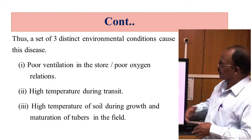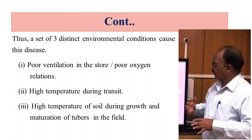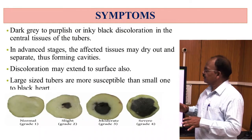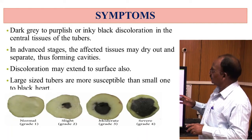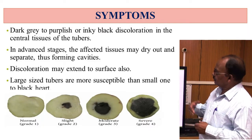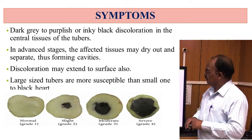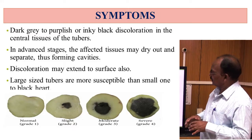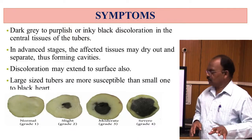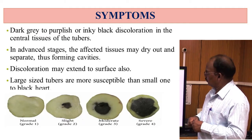The three environmental conditions are: poor ventilation in the store, high temperature during transit, and high temperature of soil during growth and maturation of tubers in the field. The symptoms appear as dark grey to purplish or inky black discoloration in the central tissues of the tubers. In the advanced stages, the affected tissues may dry out and separate, forming cavities inside the tubers. Large size tubers are more susceptible than small ones to black heart.